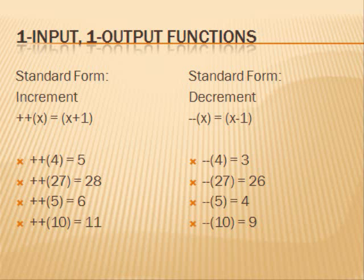The increment function is symbolized by two plus signs. The increment of x is x plus 1. Therefore, the increment of 4 is 5, and the increment of 10 is 11. The decrement function is symbolized by two subtraction signs. The decrement of x is x minus 1. Therefore, the decrement of 4 is 3, and the decrement of 10 is 9. The increment and decrement functions each have one input and one output.